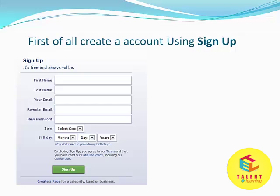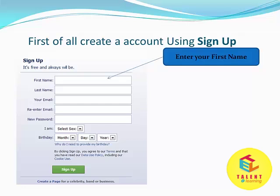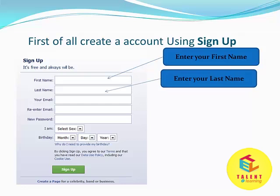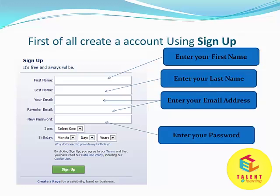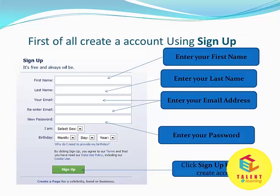This page shows us the sign-up process. Here you can enter your first name, enter your last name, your email address, and your password. Then you have to select your gender and your birth date and click on sign-up. That's it. When you click on sign-up, your account will be ready and you'll be ready to use Facebook and connect with your friends.